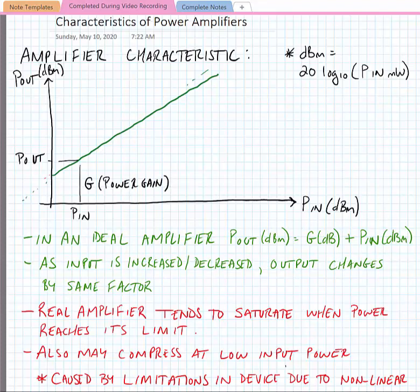This characteristic is done on a log-log scale — power in and power out are both plotted in dBm. dBm means 10 log base 10 of the input power in milliwatts. So for an ideal amplifier, the output power is equal to the gain in dB plus the input power in dBm. As the input is increased or decreased, the output changes by the same proportional factor.